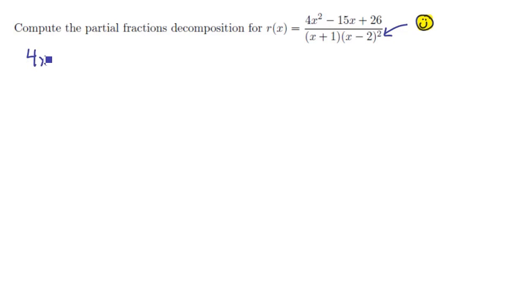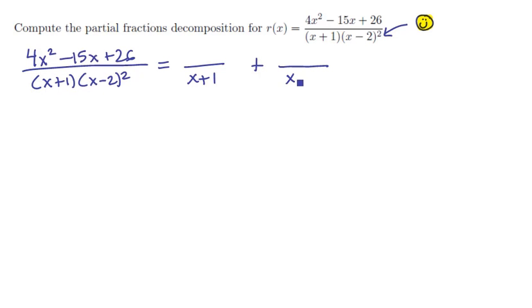So if we take 4x squared minus 15x plus 26 divided by x plus 1 times x minus 2 quantity squared, we can split this up into three terms in the partial fractions: a term over x plus 1, a term over x minus 2, and then a term over x minus 2 quantity squared to make up for the repeated root.